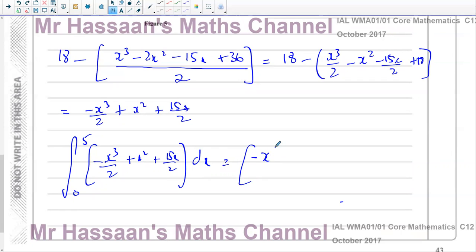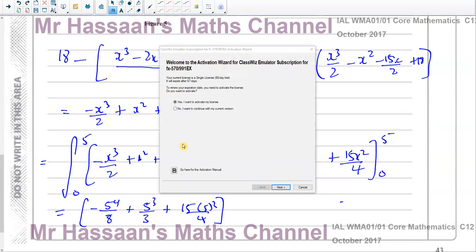So that's going to give me minus x to the power of 4 over 8. Add 1 to the power divided by the new power, plus x cubed over 3 plus 15x squared over 4. No plus c because it's a definite integral and 0 and 5. Now I have to just substitute 5 into these values and 0, 0 is going to give me 0 anyway. So once I substitute 5 into here, I should get the area required. It's minus 5 to the power of 4 over 8 plus 5 cubed over 3 plus 15 times 5 squared over 4. And that should give us our required answer.